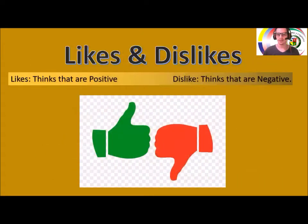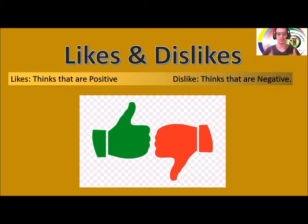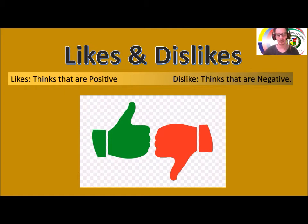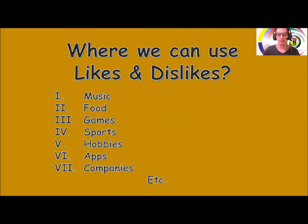In this class we have the topic: likes and dislikes — gustos y disgustos. What are likes? Likes are things that are positive, right, they're good. And dislikes are things that are negative, they're not good, they're bad. Likes son cosas que a uno le gustan, que ama hacer, cosas bonitas, cosas buenas, positivas. Y dislike lo contrario.